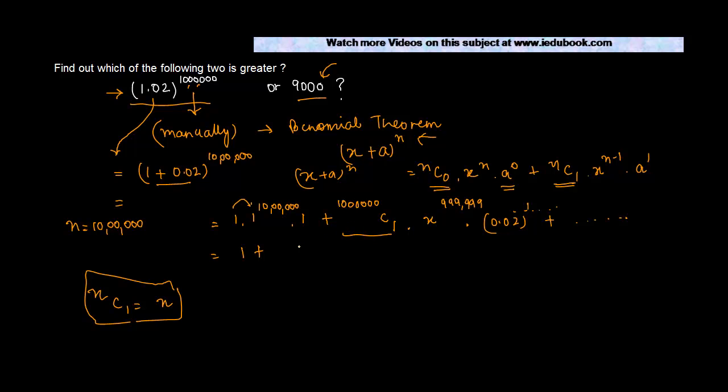So this means that one million C1 will be equal to one million into x to the power... now x in our case is 1, so 1 to this power is again going to be 1, into 0.02 to the power 1, which is 0.02.